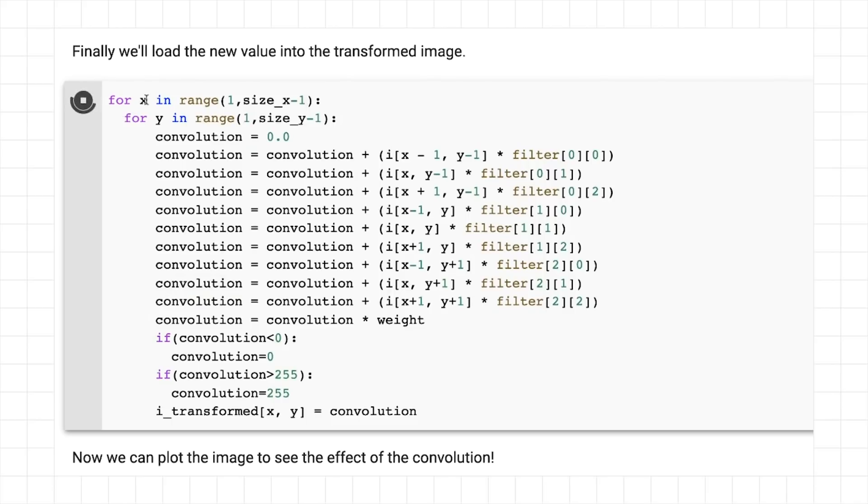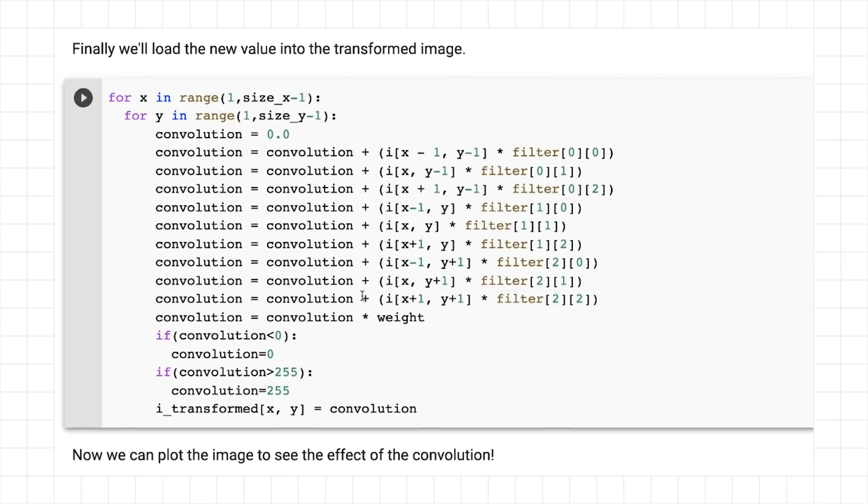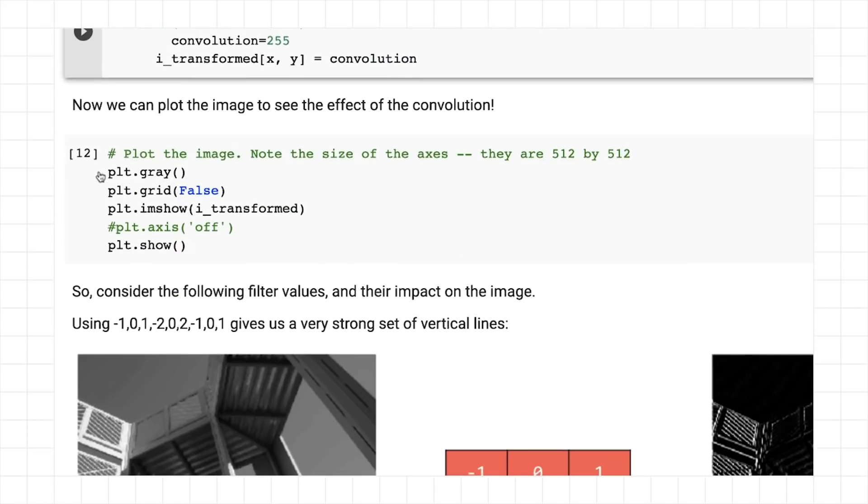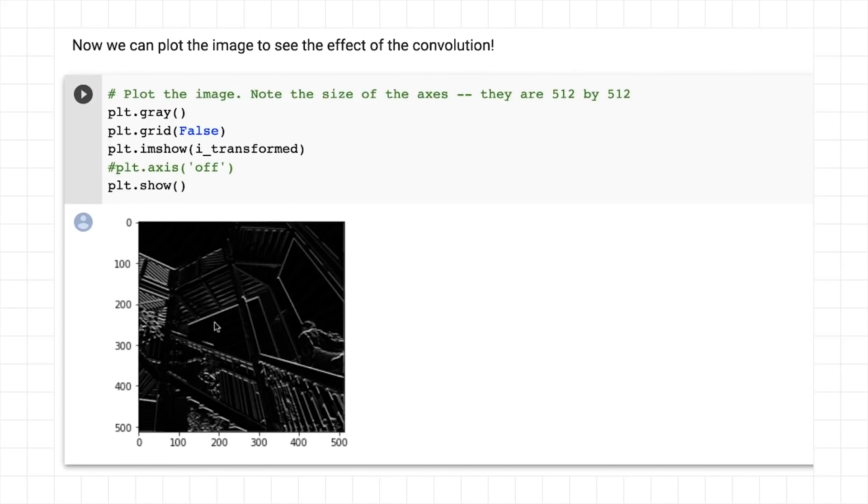Now here's just simply a loop going over the image and multiplying out the relevant pixel and its neighbors by the relevant item in the filter. Once it's done that, we can plot it to see the result. And here you can see the filter that I'm using is really emphasizing the image's vertical lines.